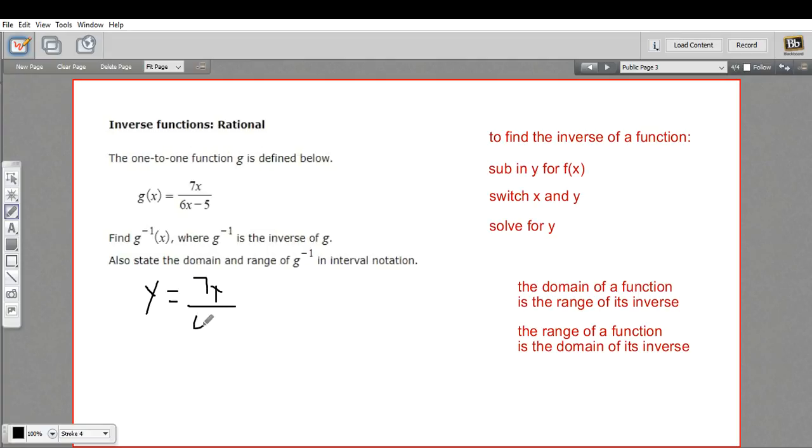So y equals 7x over 6x minus 5, and then we pull the old switcheroo. We switch x for y and y for x. So wherever you see an x, you replace it with a y. Wherever you see a y, you replace it with an x. So this becomes x equals 7y over 6y minus 5.